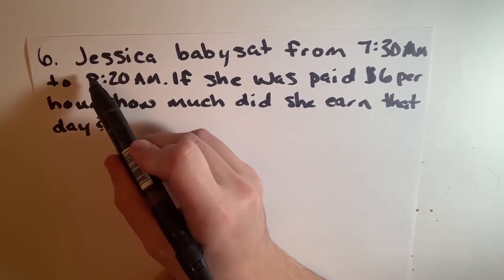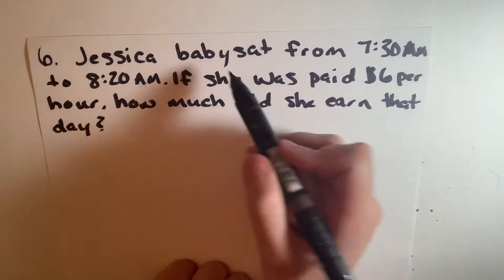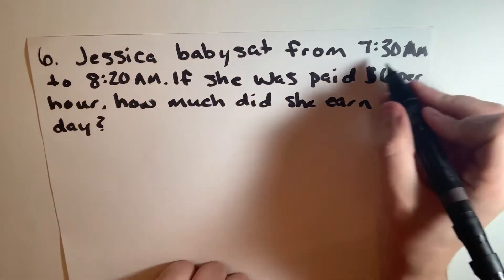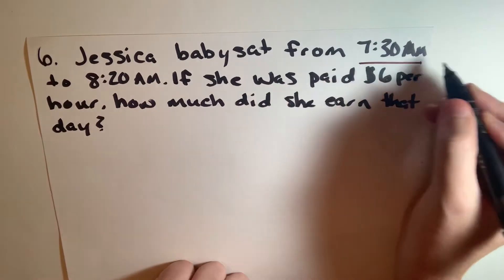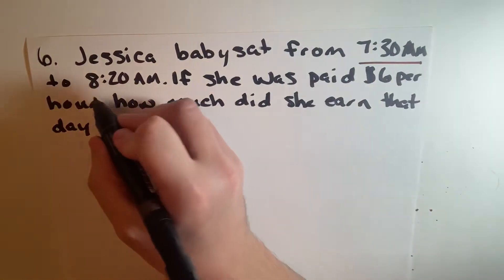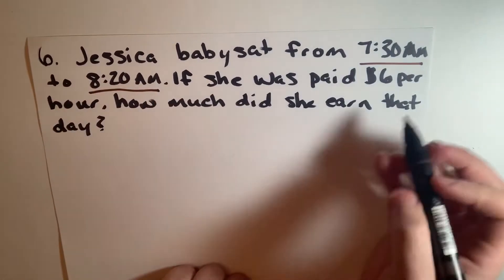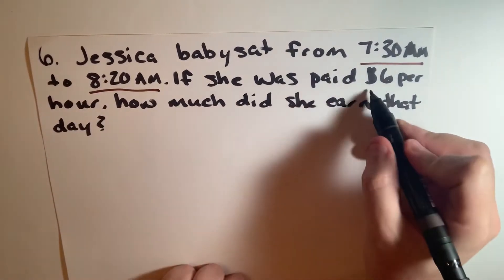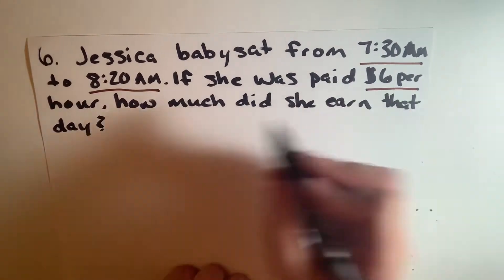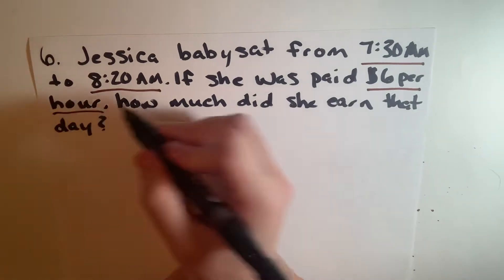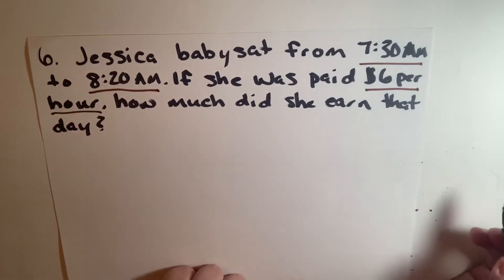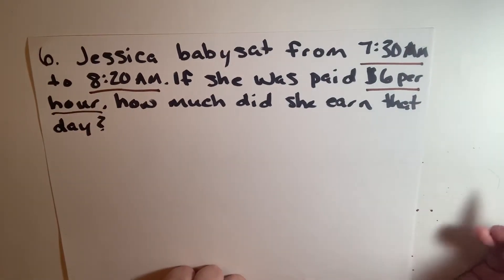For question six, it says Jessica babysat from 7:30 a.m. to 8:20 a.m. If she was paid $6 per hour, how much did she earn that day?